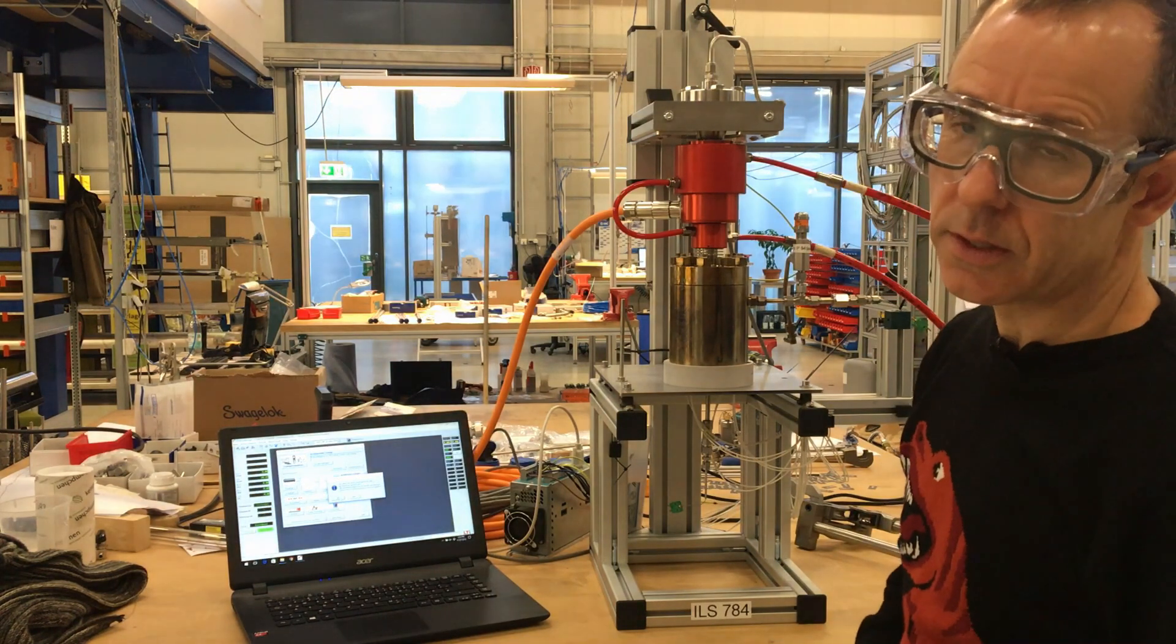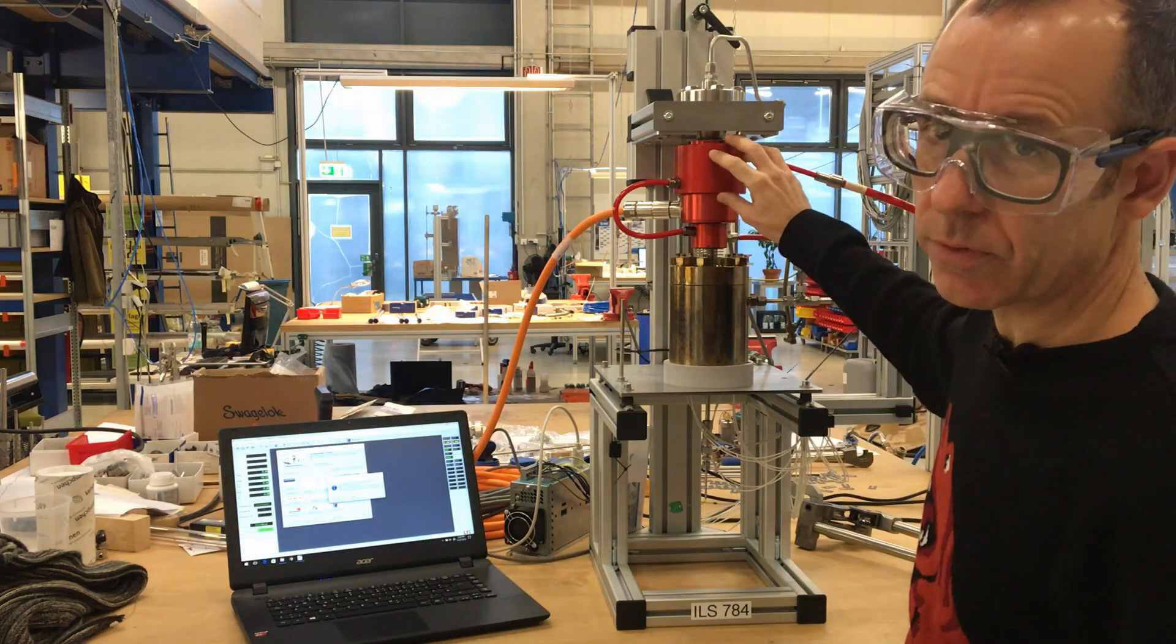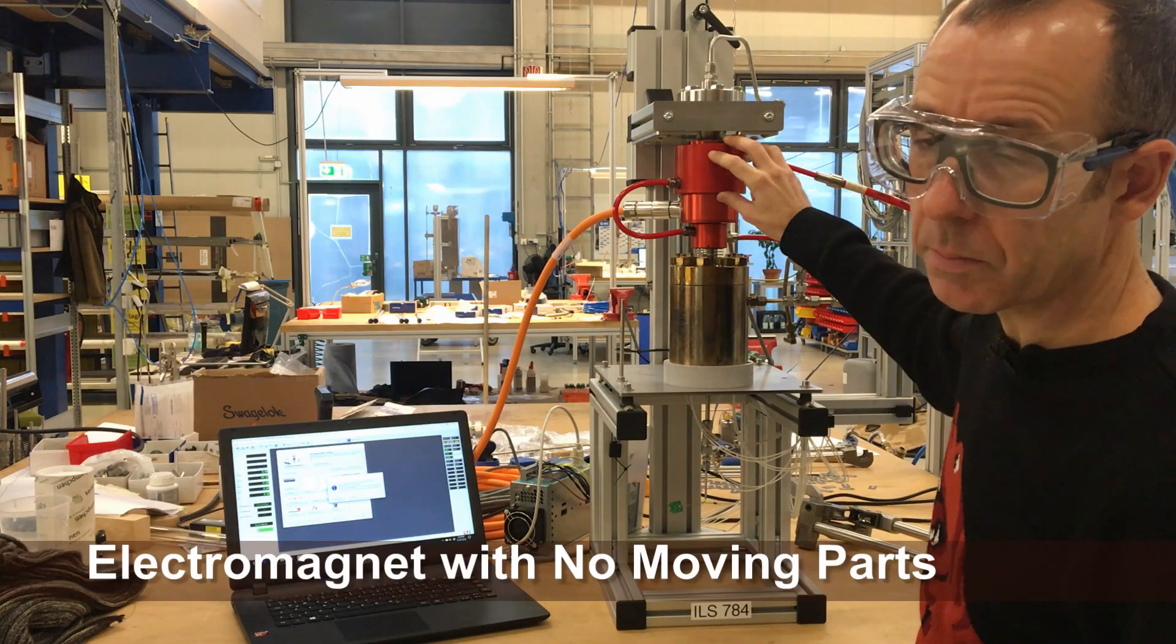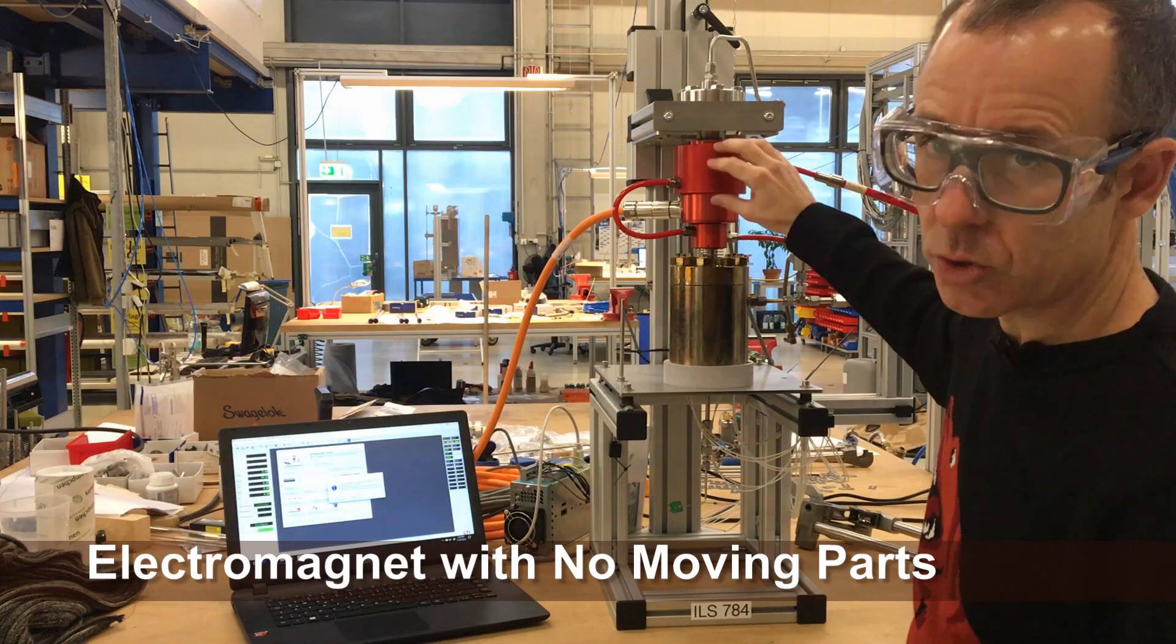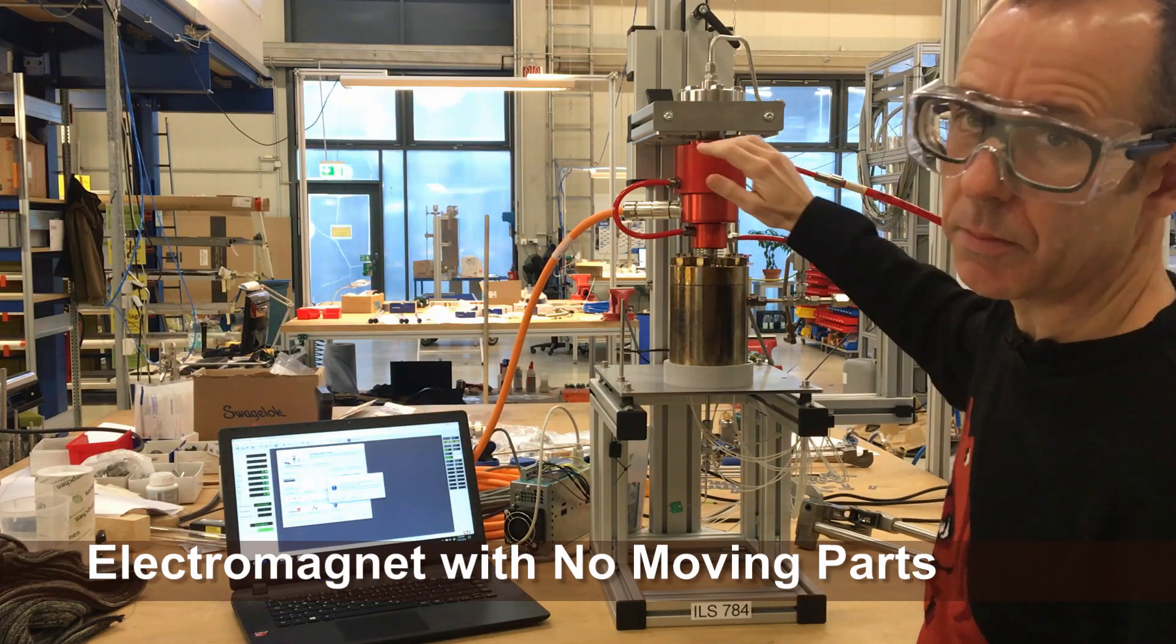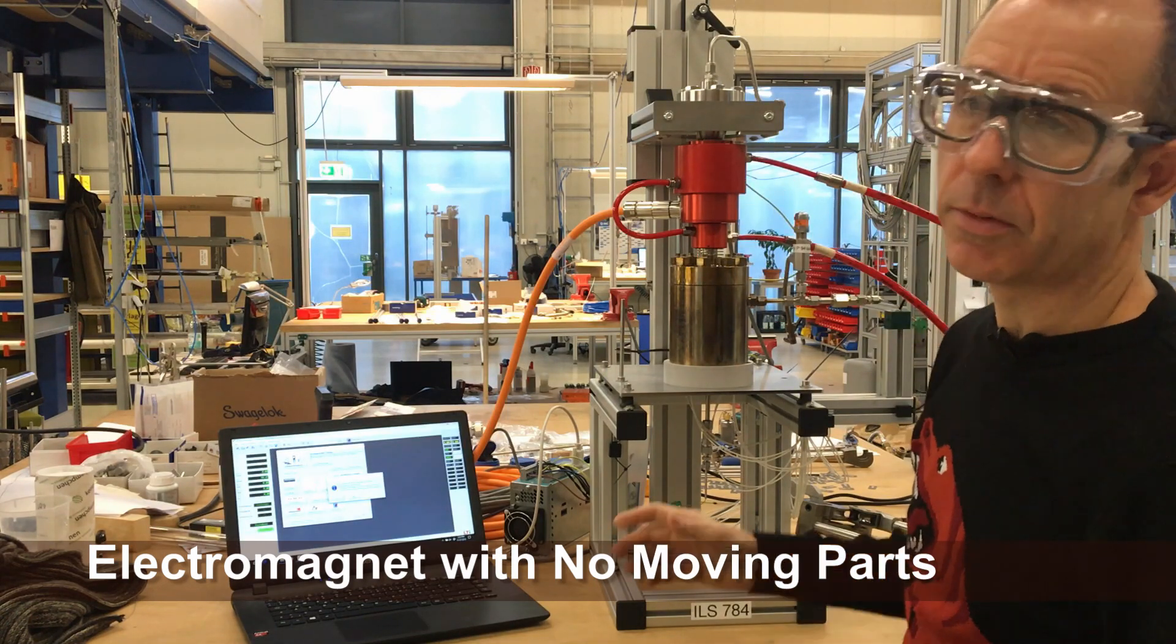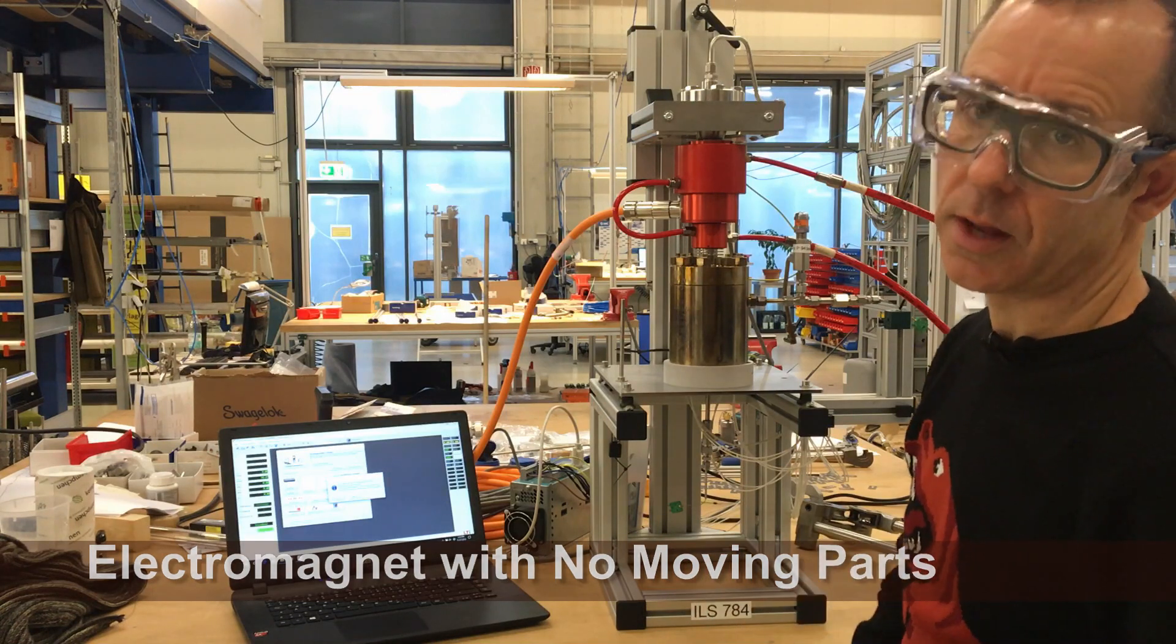One of the other big advantages of this design is we use an electromagnet for stirring the reactor, so there's no moving parts. There's no motor coupled to a magnetic coupling. It's a pure electromagnet which generates a rotating magnetic field which then stirs the rotor at up to 10,000 RPMs.